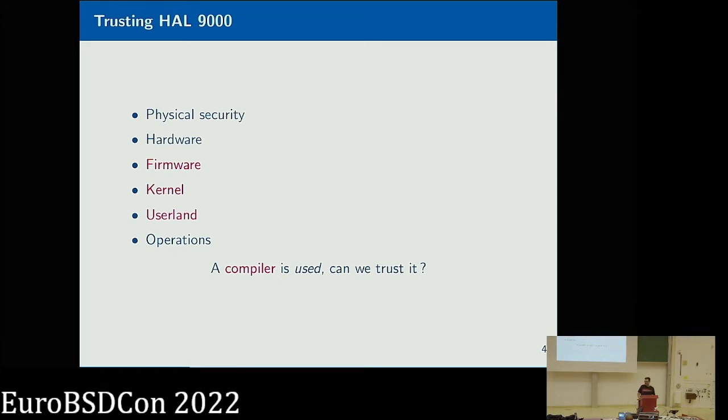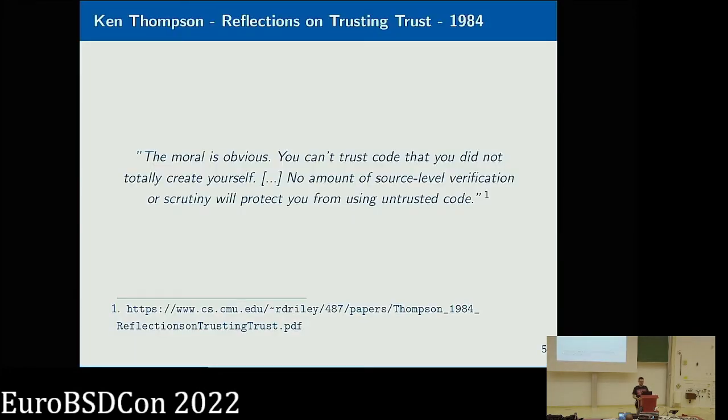What about the actual compiler that compiles this firmware kernel or user land applications? And that's the whole subject of Ken Thompson 1974, I think, paper called Trusting Trust, 84, sorry my bad. The conclusion of Ken Thompson is quite straightforward, is that we cannot actually trust any code that hasn't been written by ourselves, compilers included.